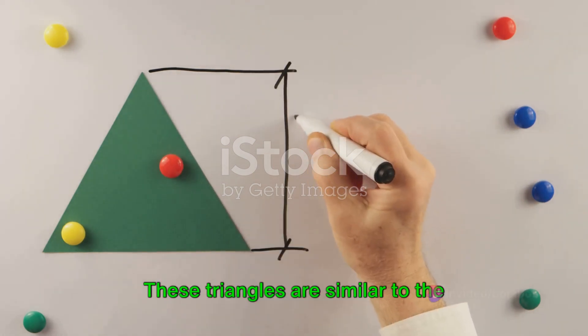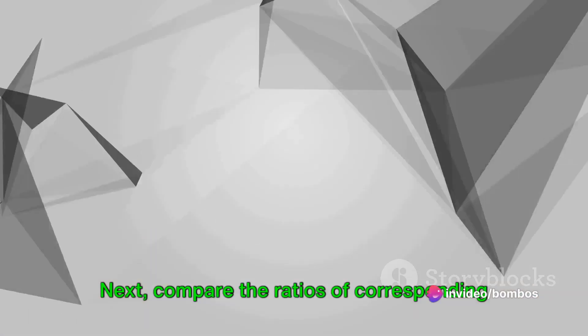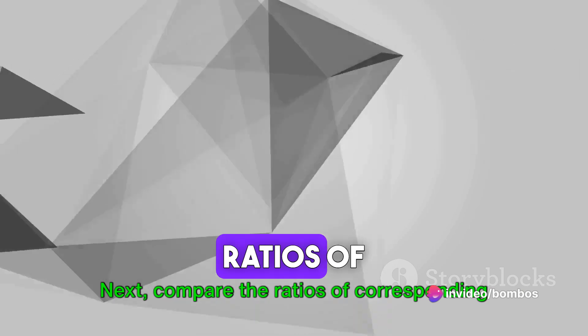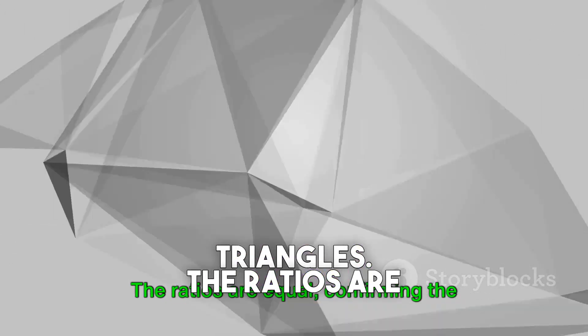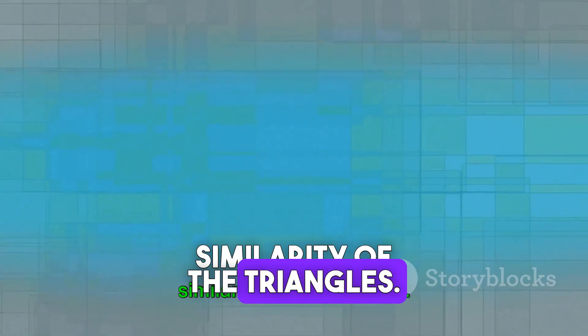These triangles are similar to the original right triangle. Next, compare the ratios of corresponding side lengths in these triangles. The ratios are equal, confirming the similarity of the triangles.